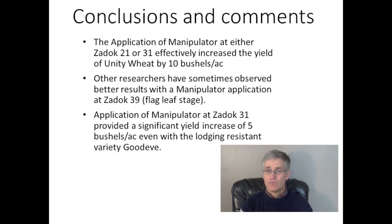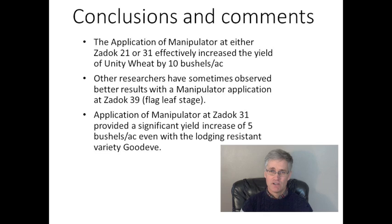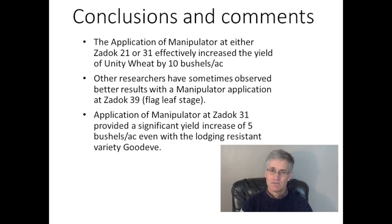In conclusion, the application of Manipulator at either Zadok 2-1 or 3-1 increased the yield of Unity wheat by about 10 bushels per acre. Keep in mind that other studies have seen reduced efficacy by applying at the 2-1 stage — it's sometimes just too early. Other researchers have sometimes found better results at the 3-9 stage, but there is apprehension that this timing may worsen lodging under certain severe conditions, and it hasn't proven itself over a wide range of conditions like the 3-1 stage has in Europe. Application of Manipulator at the 3-1 stage provided a significant yield increase of 5 bushels even with a variety like Good Eve. Overall, Manipulator looks like a pretty promising product — just make sure you've got a market for that wheat if you decide to apply it.